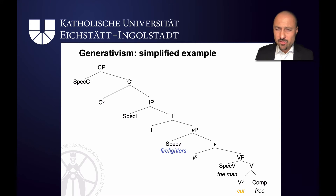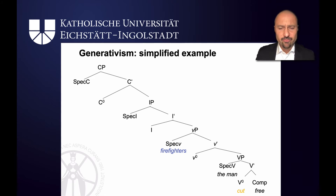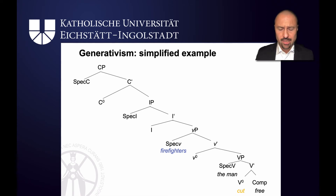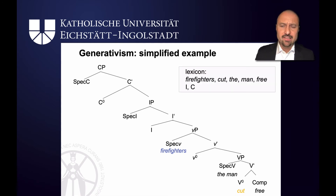In generative grammar, what allows children to acquire language is universal grammar. As part of universal grammar you also have covert, hidden information — for example, functional categories like inflection, where tense or agreement would be encoded, or complementiser, where the illocutionary force of a sentence would be encoded. So in a sentence like 'firefighters cut the men free,' you get quite an elaborate structure that is mostly predetermined by universal grammar, and then the lexicon just enters the words into the right kind of spaces.